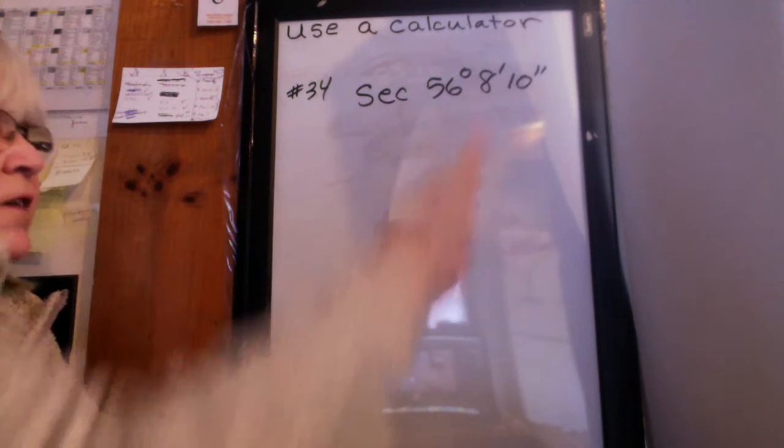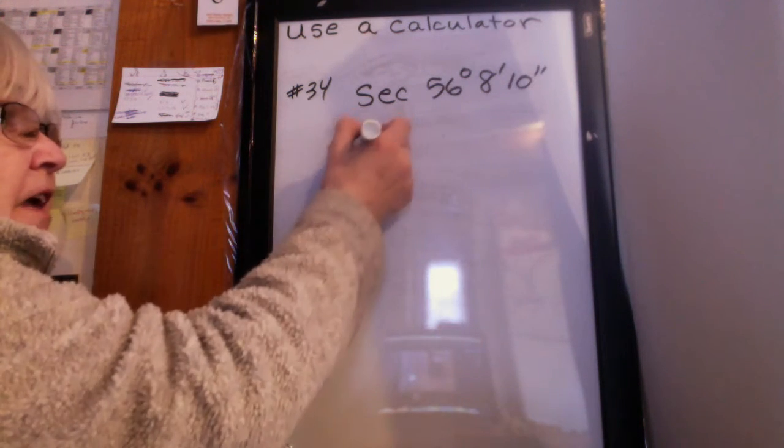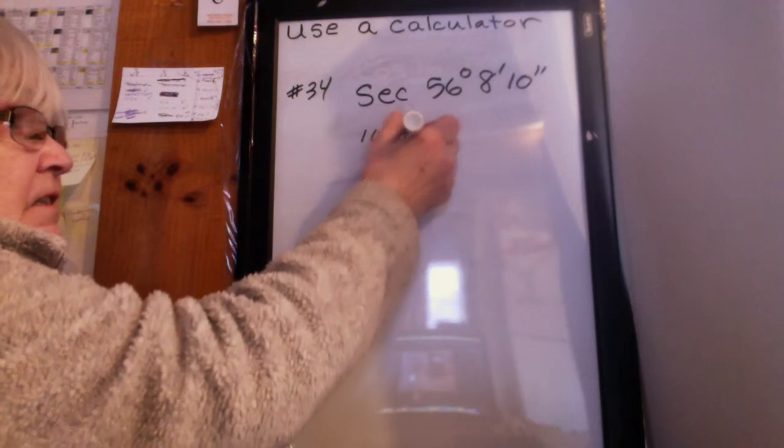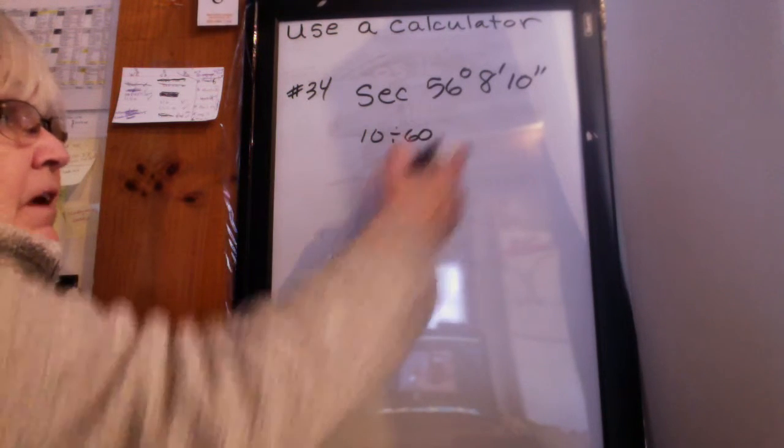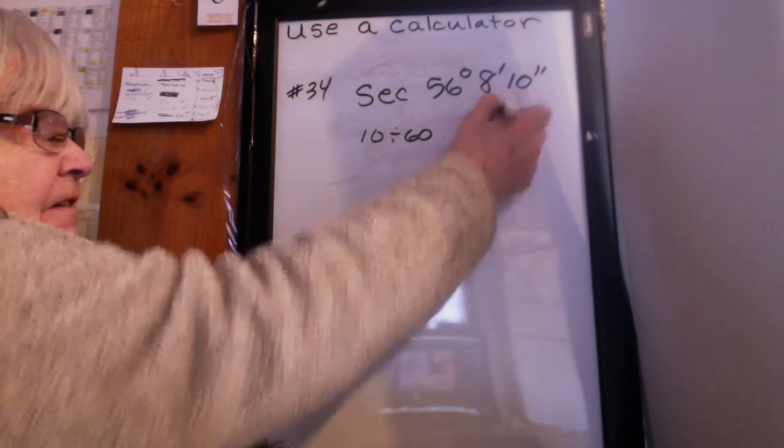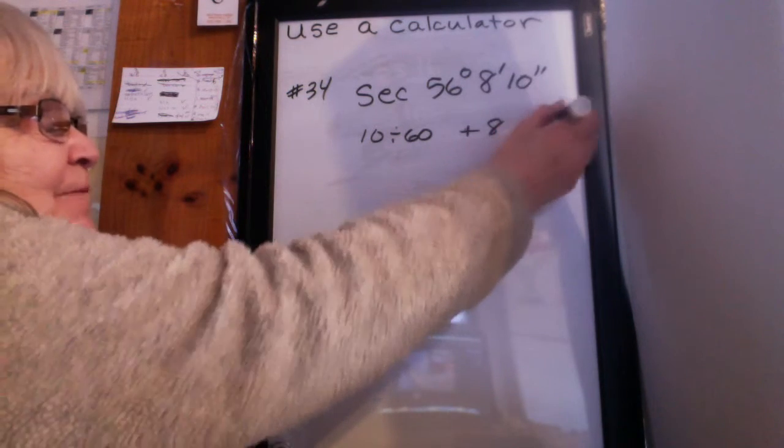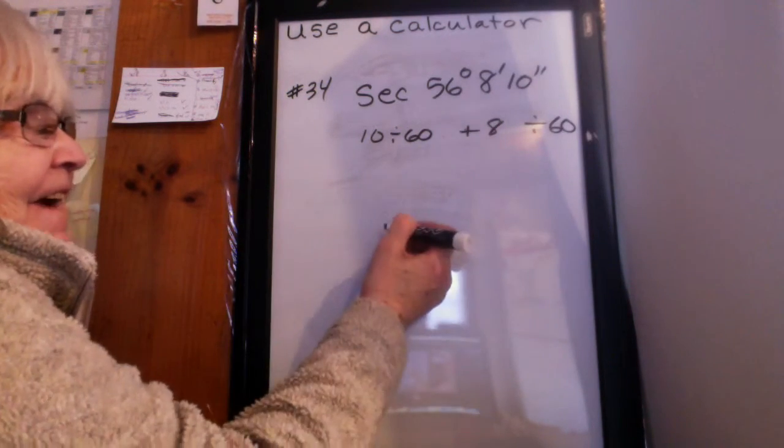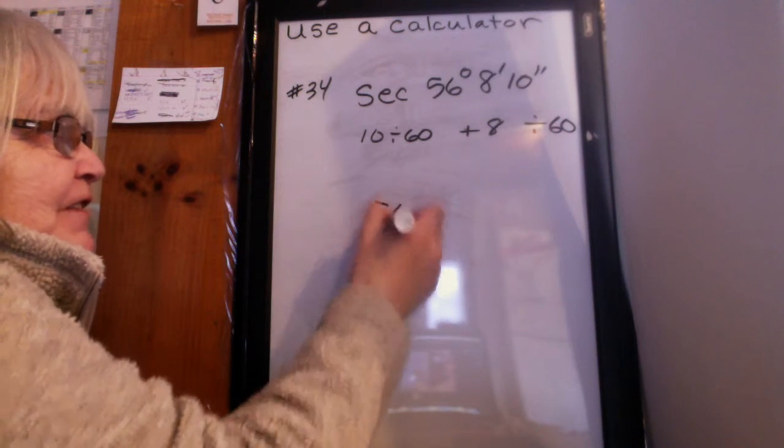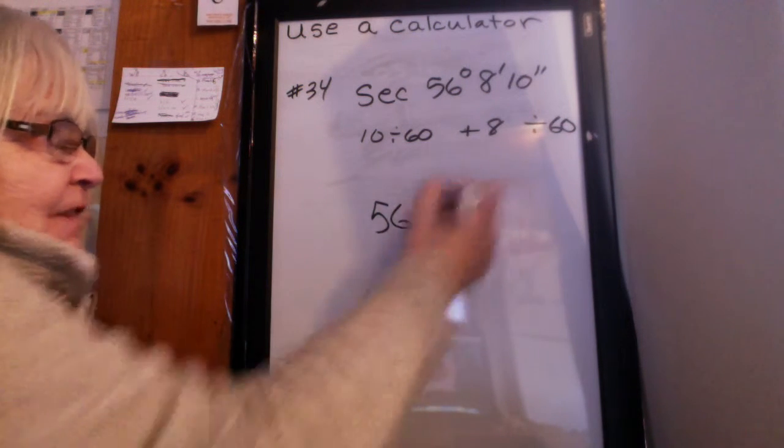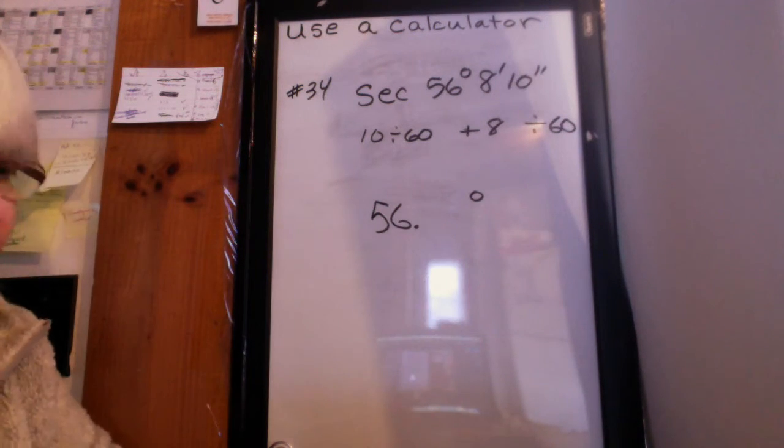So this one's a little bit longer, but again, I do the same process starting from here. I do 10 divided by 60, get the answer. Then I do plus 8, then I get the answer. Do divided by 60 again, and then I'm going to do 56 point that degrees and get the answer. So here's how we do it.